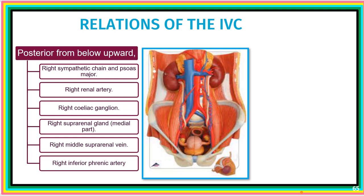The posterior relations of the inferior vena cava, running from below upwards, are: the right sympathetic chain and psoas major muscle, the right renal artery, the right celiac ganglion, the right suprarenal gland, the middle suprarenal vein, and the right inferior phrenic artery.